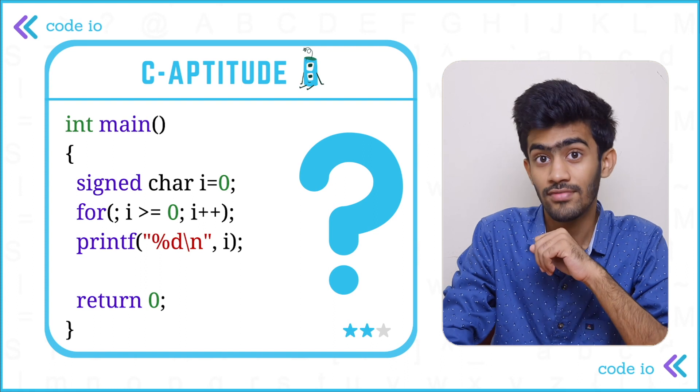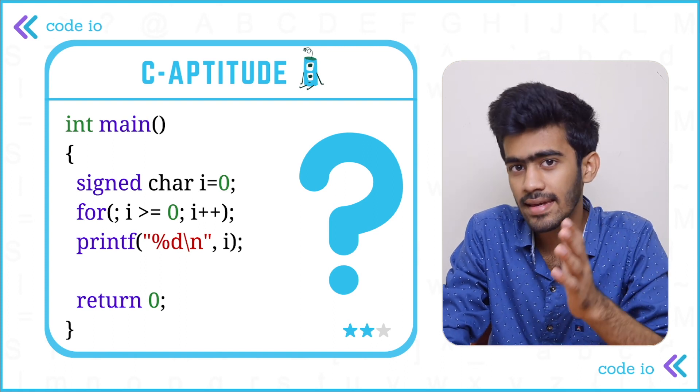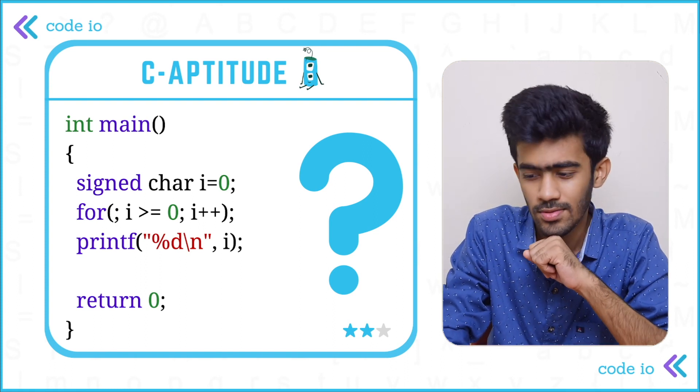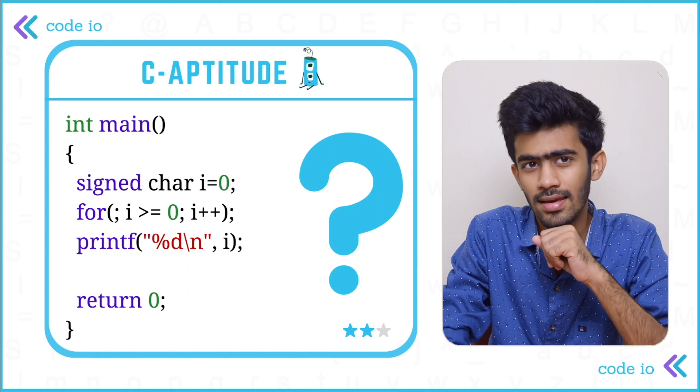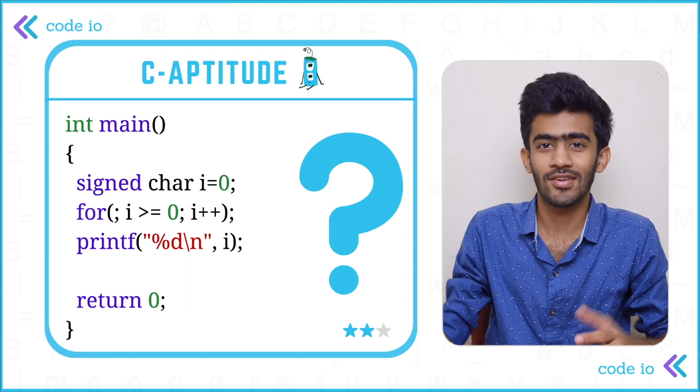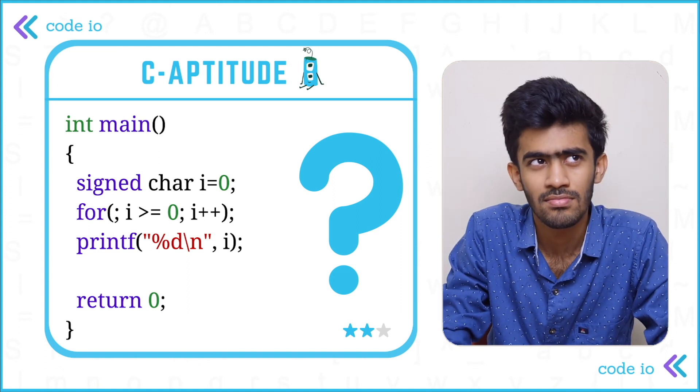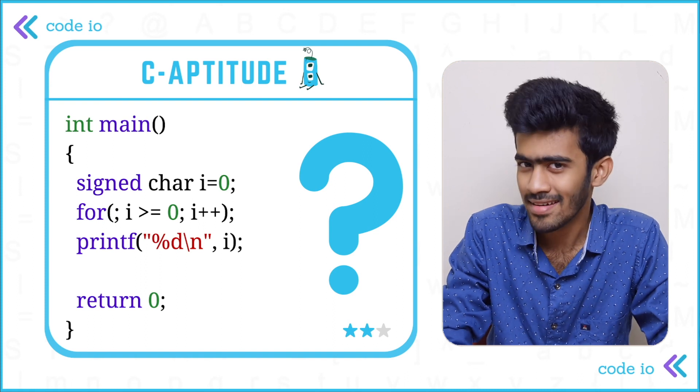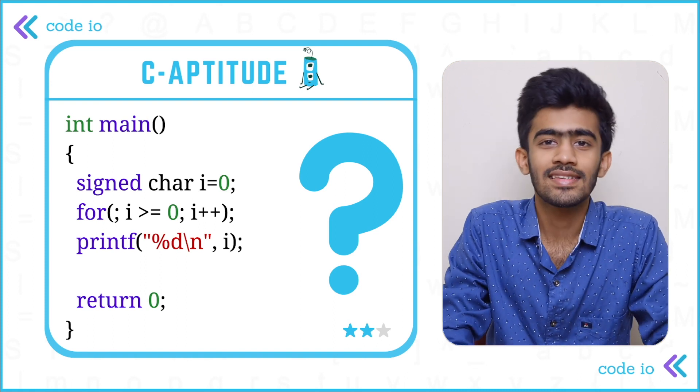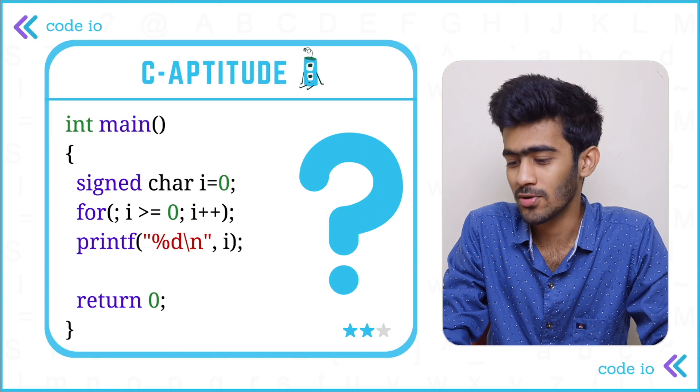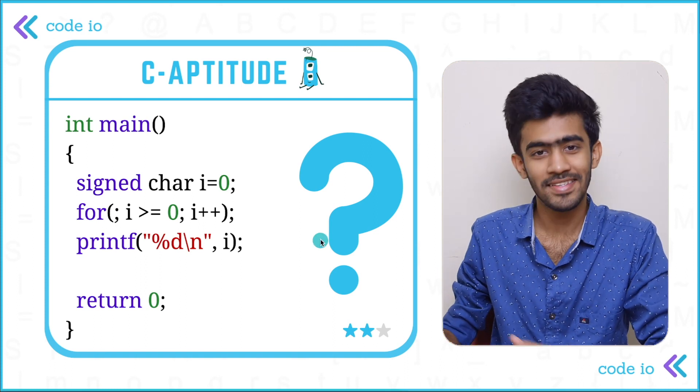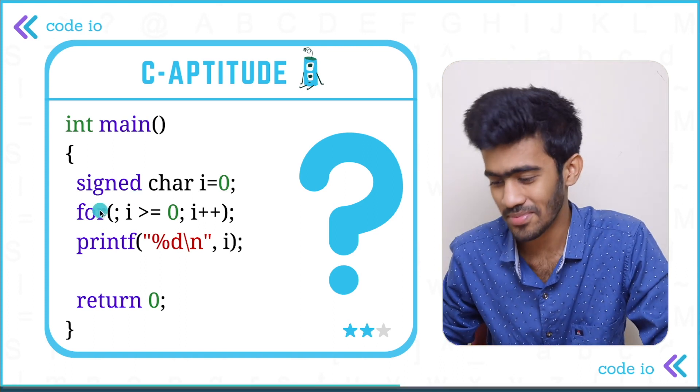So here we have a main function and a signed character i is equal to 0. First I thought, it's a character and you're assigning the value of an integer. Isn't it an error? And it seems like C is too weird to consider this an error, and hence we'll just move on to the next statement that we have.